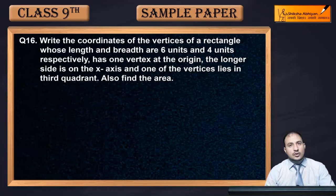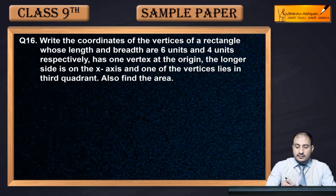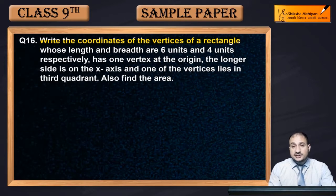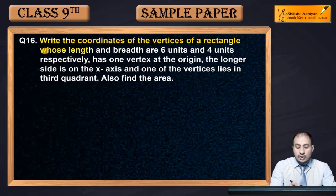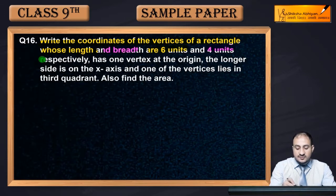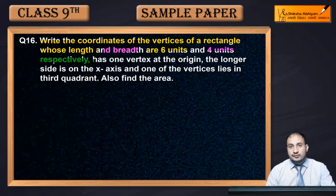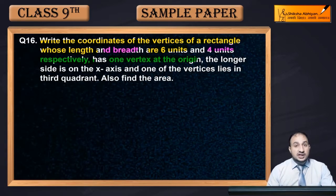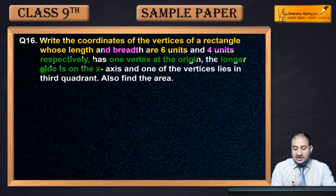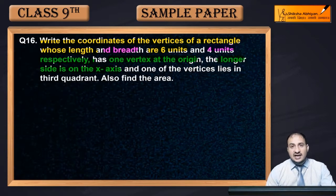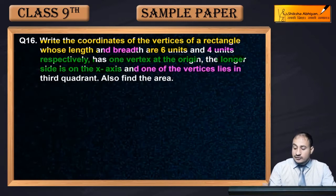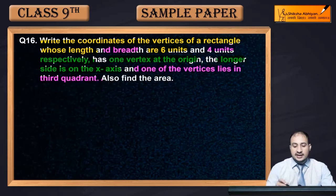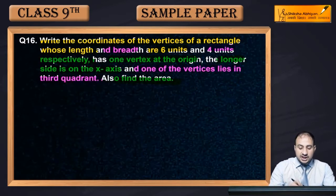Question 16: Write the coordinates of the vertices of a rectangle whose length and breadth are 6 units and 4 units respectively. One vertex is at the origin, the longer side is on the x-axis, and one of the vertices lies in the third quadrant. Also find the area of the rectangle.